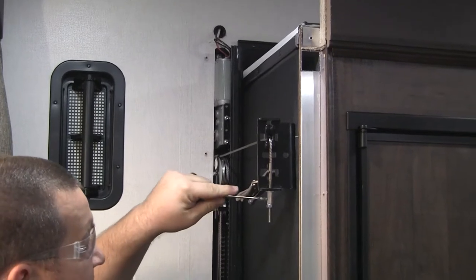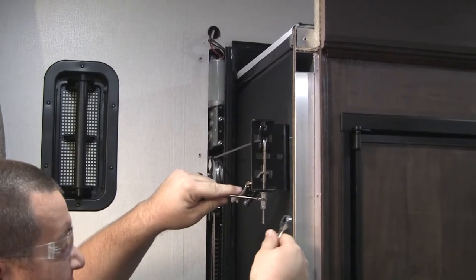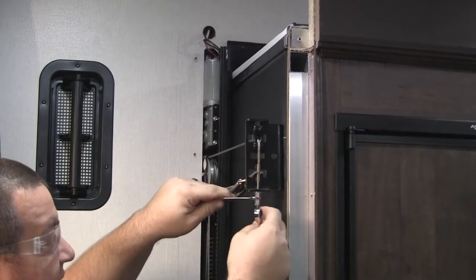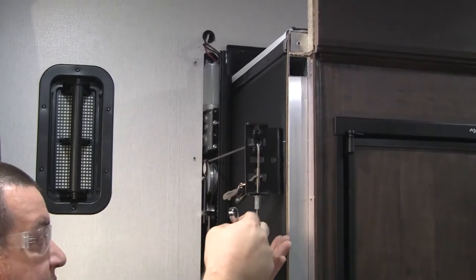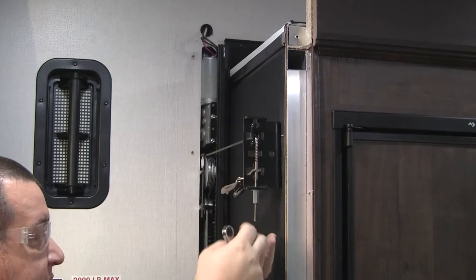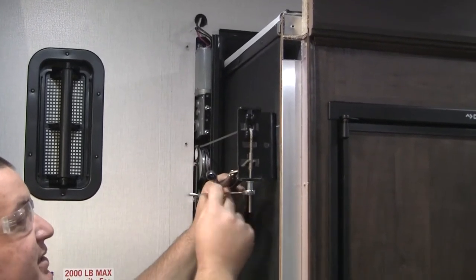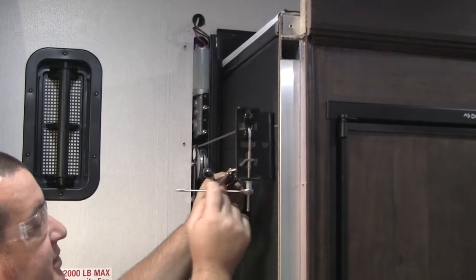And then you'll use a 3/8ths wrench for the cable coupling nut and a 7/16ths wrench for the jam nut and you'll break that loose. Remove the jam nut and then you can use a ratcheting boxed end wrench to loosen the cable up.